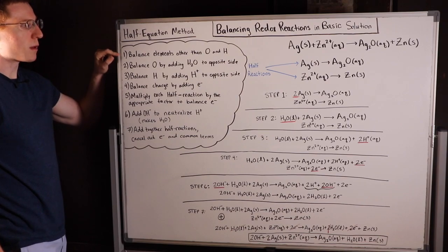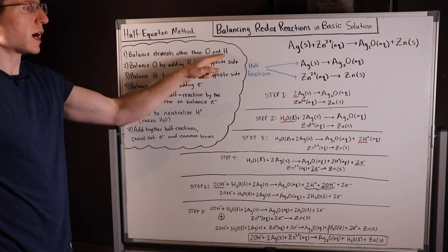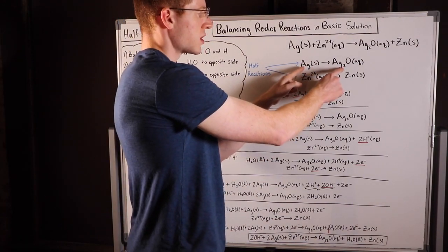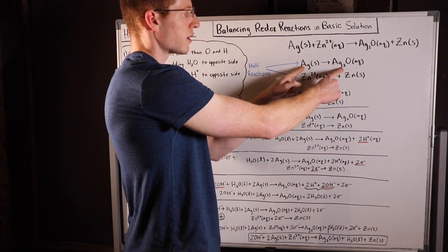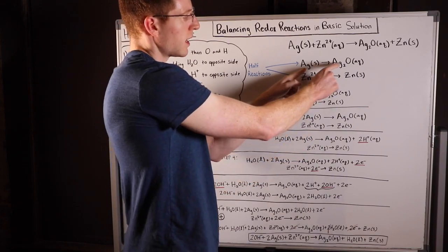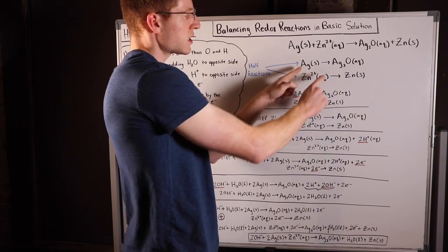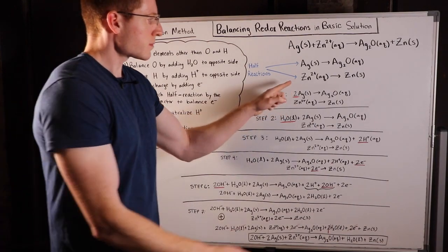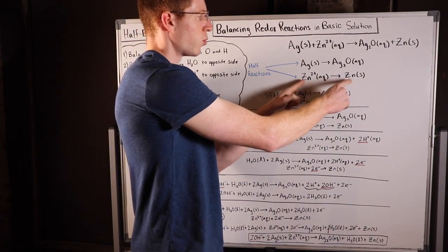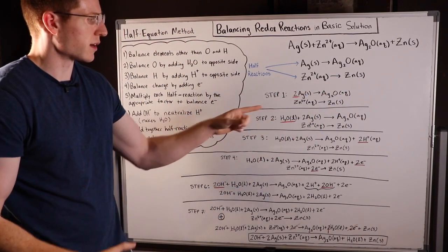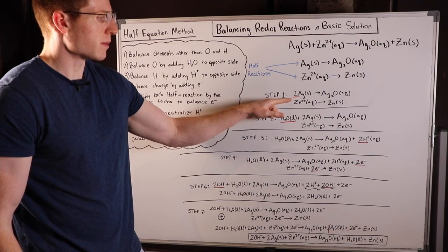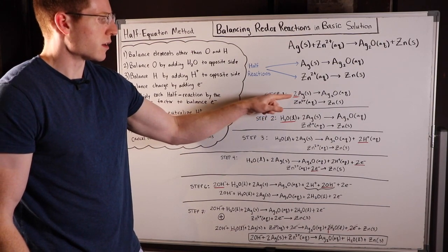Step one: we balance all the elements other than oxygen and hydrogen. The element other than oxygen in this first equation is silver. There's one silver over here and two silvers over here, thus I need to put a two here to balance this out. In this equation I have one zinc and one zinc, so there's no balancing necessary there. You can see the only change I made was with that red line under the two.